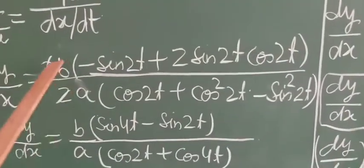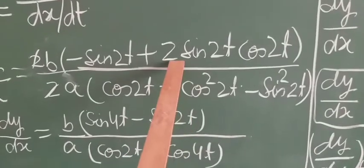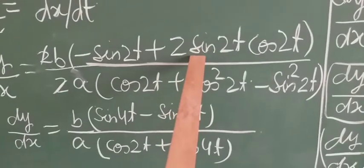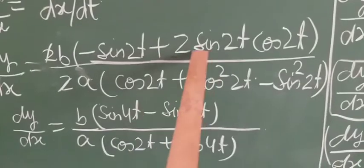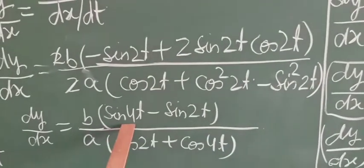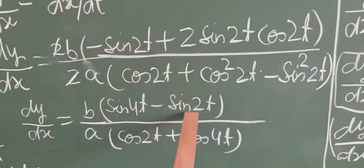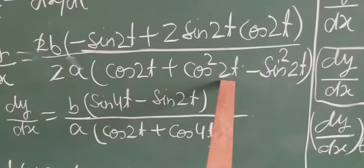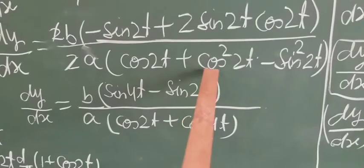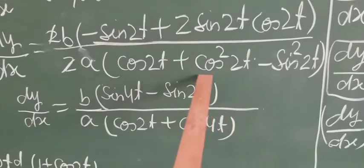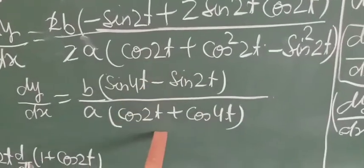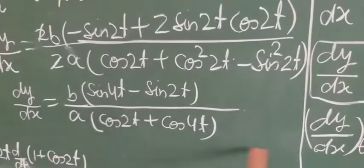Applying trigonometric identities: 2·sin2t·cos2t equals sin(4t) by the formula 2sinA·cosA = sin2A, so the numerator becomes (sin4t − sin2t). Applying cos²A − sin²A = cos2A with A = 2t gives cos4t, so the denominator becomes (cos2t + cos4t). Now we can apply the sum-to-product formulas.